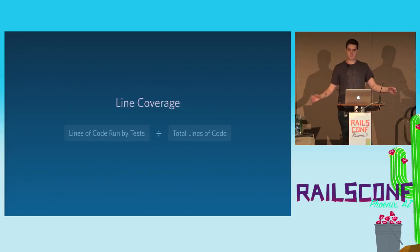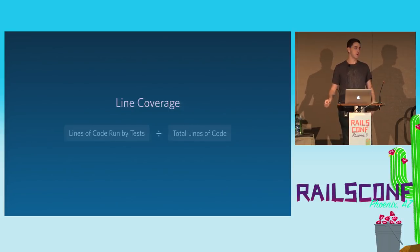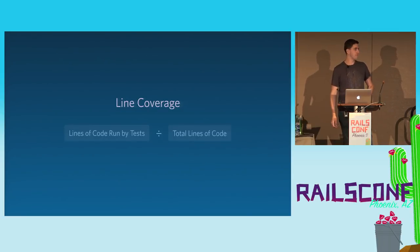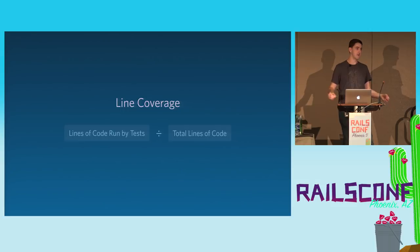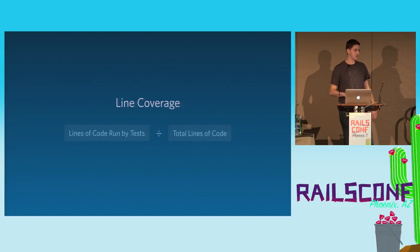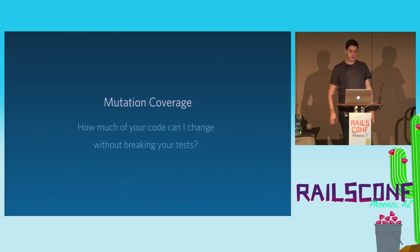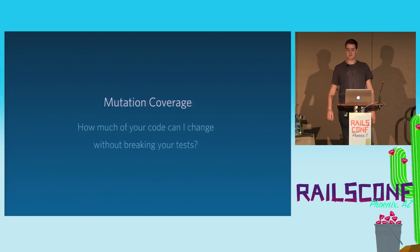Before we talk about mutation coverage, we need to be on the same page for line coverage or test coverage in general. Usually when we're talking about test coverage, we mean line coverage — roughly the number of lines of code run by your tests over the total lines of code in the project. There are different variations, like branch coverage. Mutation testing asks a different question: how much of your code can I change without failing your tests?